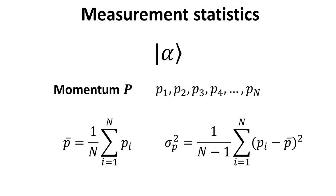In similar fashion, we can also compute similar measurement statistics for the momentum observable. We shall show that quantum mechanics stipulates that the variance in the position and momentum measurements are fundamentally constrained by the fact that they are incompatible observables.